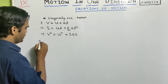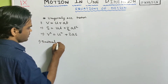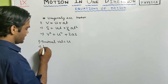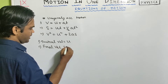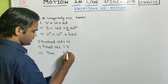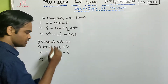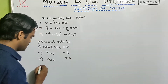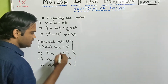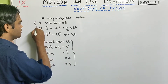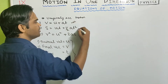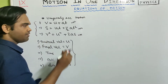Suppose a body is moving with an initial velocity of u, and after time t the final velocity becomes v. The acceleration produced is a, and suppose the distance travelled is s. These parameters are associated with each other through the 3 equations of motion, which we are going to derive.